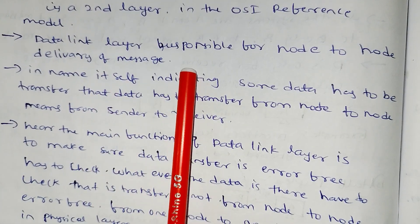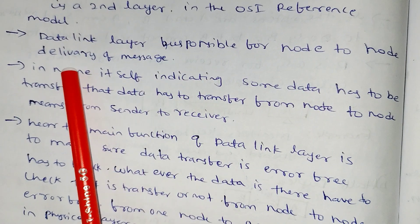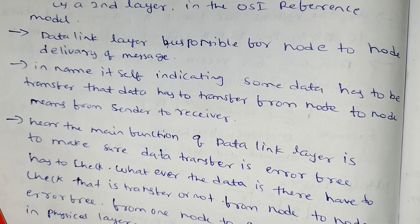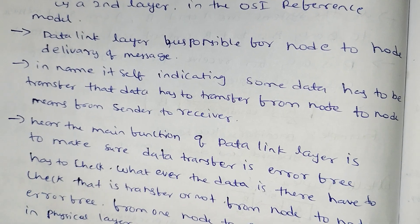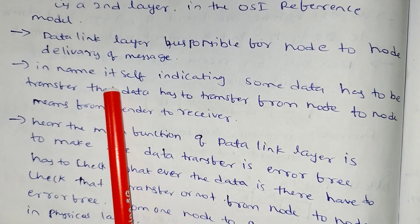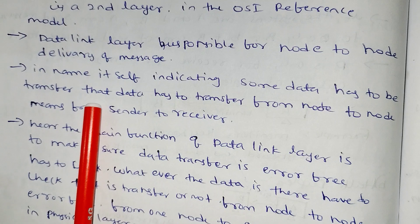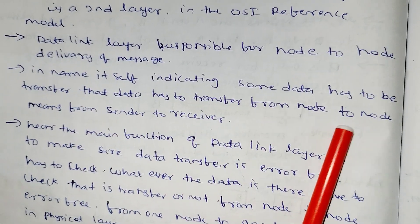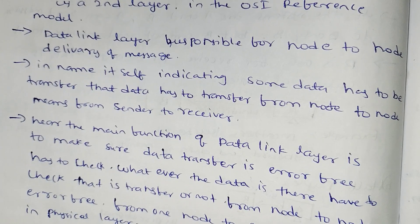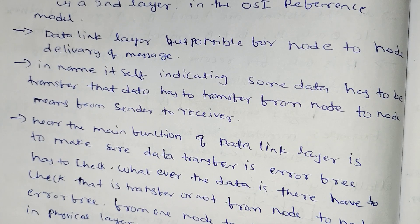The data link layer is responsible for node-to-node delivery of messages — that means computer-to-computer, computer-to-router, or router-to-mobile. The name itself indicates that data has to be transferred from node to node, from sender to receiver.